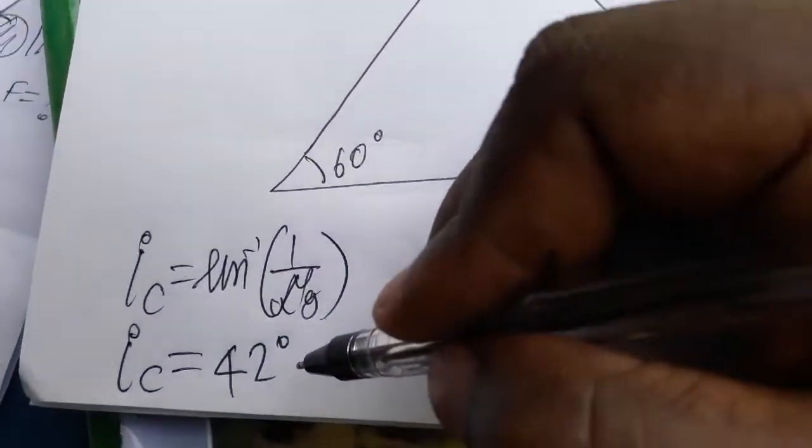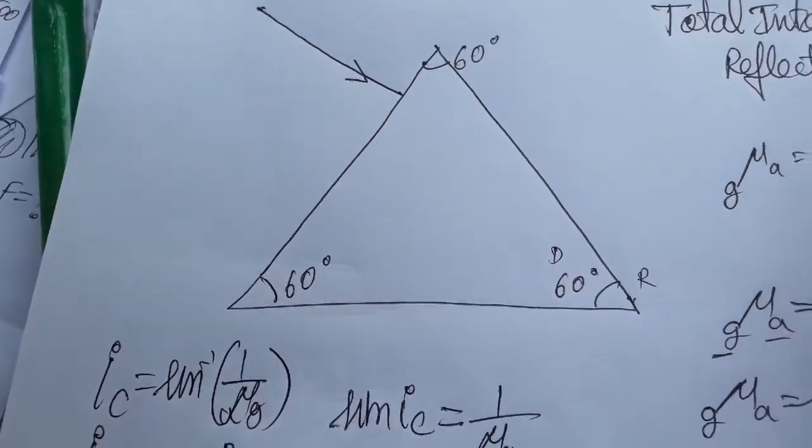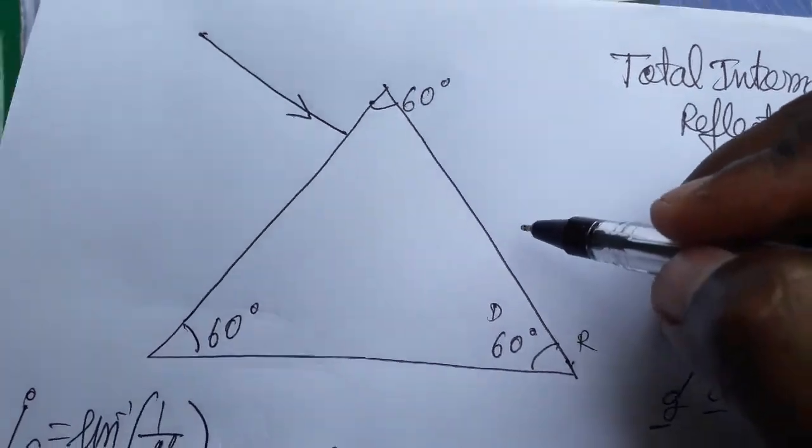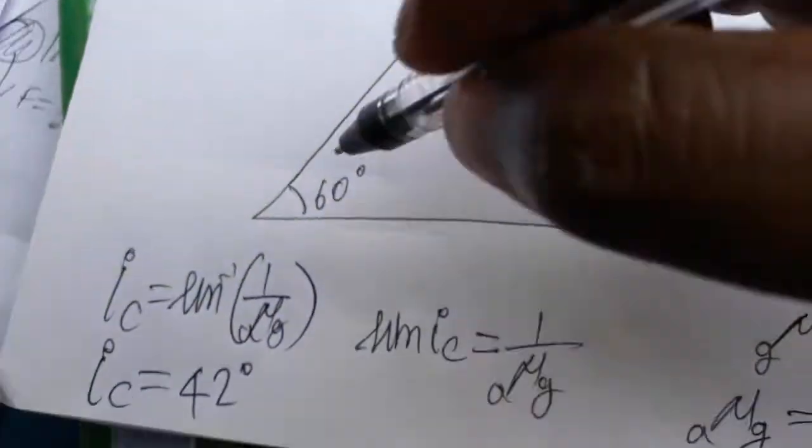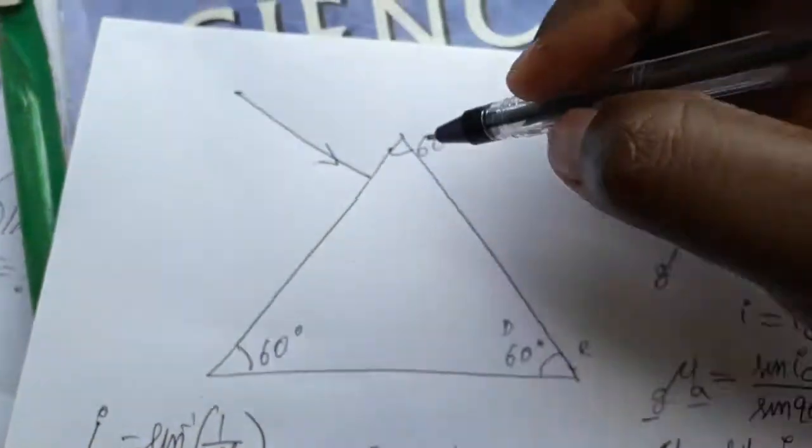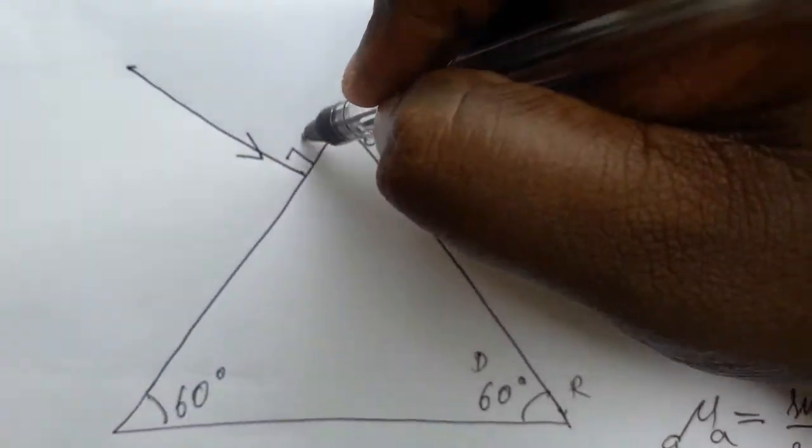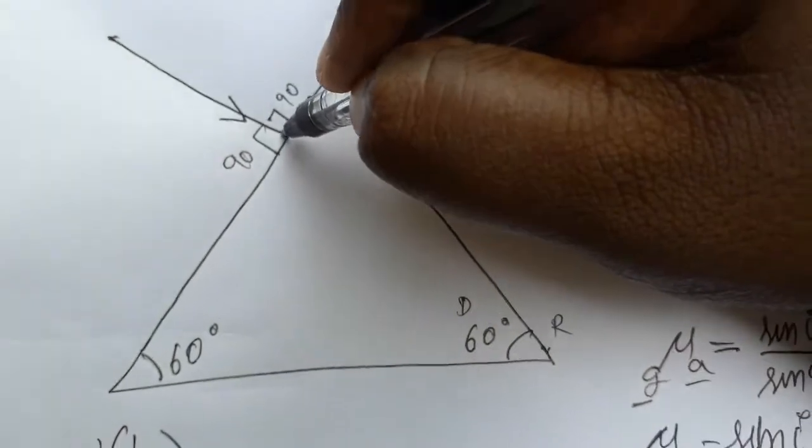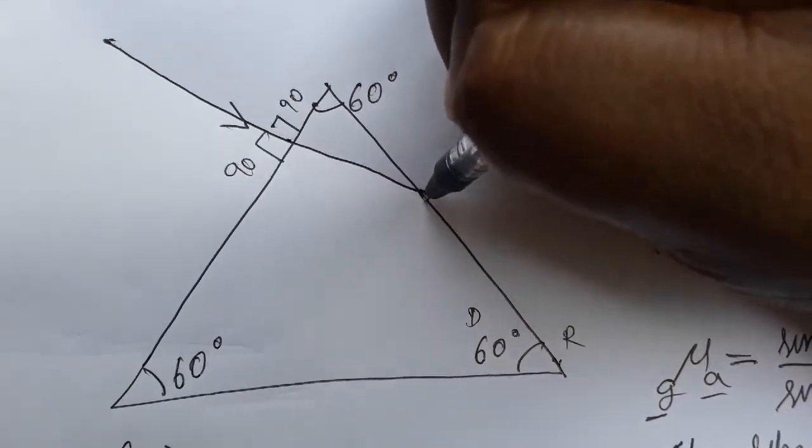If it is less than 42 it will be refracted, more than 42 it will be reflected. Total internal reflection will only happen when the angle is more than 42. Now this light at 90 degrees goes straight, it will be refracted. The light is hitting here.